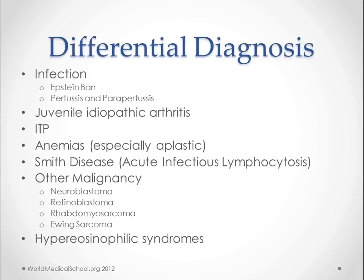Smith disease is also on the differential — there's not much information available, but you can look it up on wrightdiagnosis.com. Other malignancies are of course on the list, especially those that can affect the bone like neuroblastoma, retinoblastoma, rhabdomyosarcoma, and Ewing sarcoma. Any other malignancy is also considered because all of them can cause changes in blood counts and fever, so we need to rule out all malignancies.